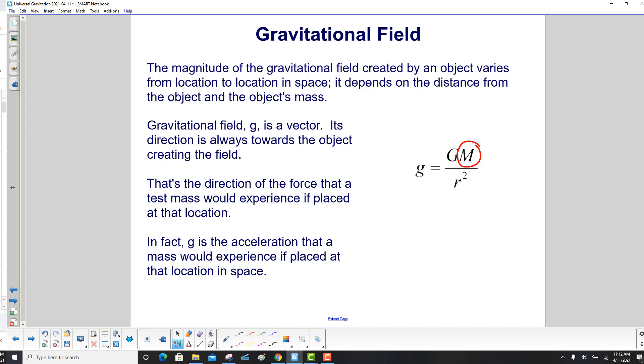That's the direction of the force that a test mass, which is our little M here, would experience if placed at that location. In fact, g is the acceleration that a mass would experience if placed at that location in space.